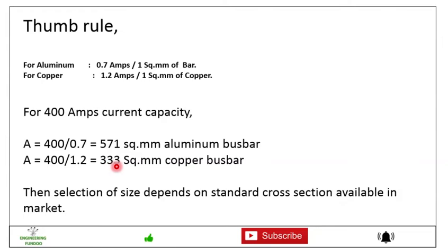For selecting this cross section area available in the standard size, that will be 20 mm by 5 mm or 20 mm by 10 mm, 30 mm by 10 mm. So there are various standard sizes available in the market and the next higher size we need to select. Now this is the general thumb rule.